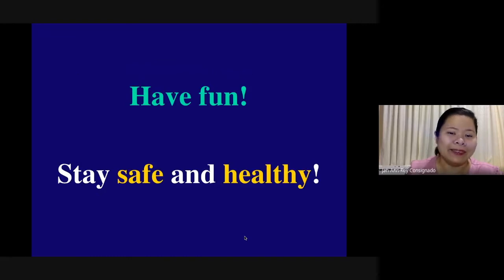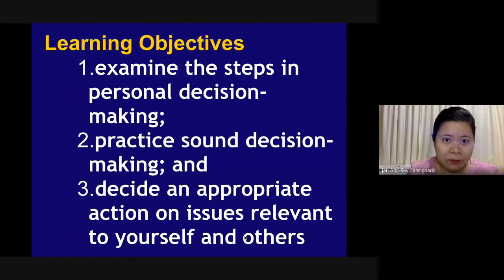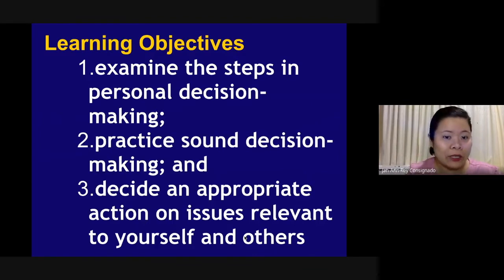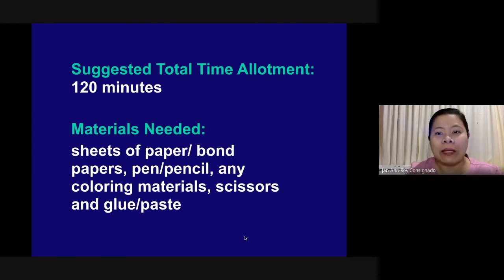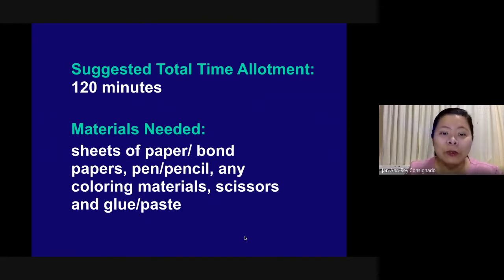Have fun, stay safe, and healthy. Module seven: sound decision-making. Learning objectives: Number one, examine the steps in personal decision-making. Number two, practice sound decision-making. And of course, decide an appropriate action on issues relevant to yourself and others. Suggested total time allotment: 120 minutes. Materials needed are sheets of paper or bond papers, pen or pencil, any coloring materials, scissors, and glue or paste.